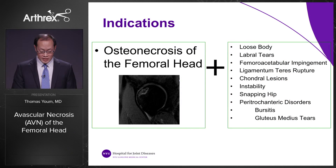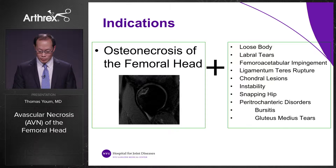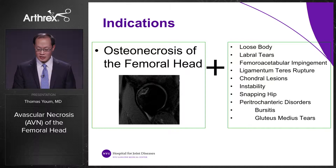When I first implemented this procedure, my indications for this type of surgery was osteonecrosis of the femoral head in conjunction with intra-articular pathology addressable by hip arthroscopy, which includes loose body, labral tears, femoral acetabular impingement, ligamentum teres rupture, chondral lesions, instability, snapping hip, and extra-articular disorders including peritrochanteric disorders such as greater trochanteric bursitis and gluteus medius tears.